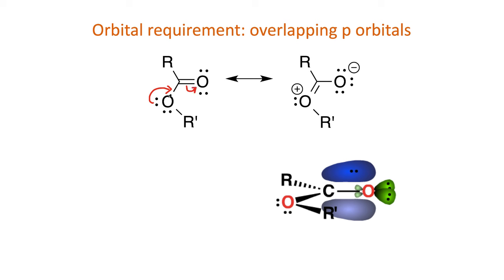That orbital overlap requirement holds for any delocalized system. For example, in this ester, the electrons involved in resonance or delocalization are involved in the pi system.